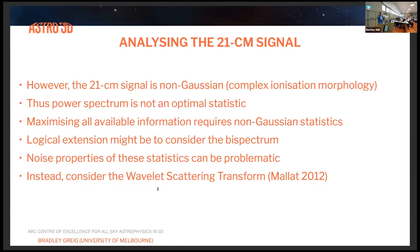The logical extension might be to consider the bispectrum — the Fourier transform of the three-point correlation function. However, the noise properties of these statistics can be quite problematic. So instead, what I've looked at in this work is the wavelet scattering transform, which is a technique that deals with noise properties in a cleaner and easier way.